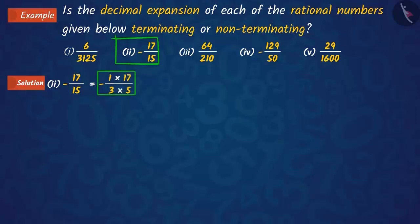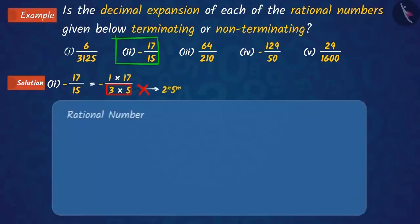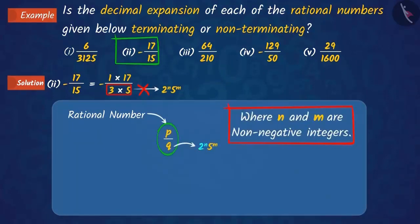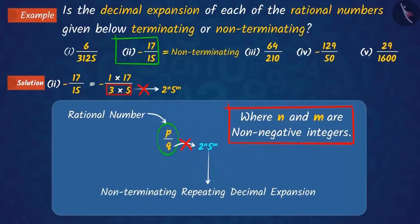After analyzing it, we see that the denominator is not in the form of 2 raised to n into 5 raised to m. You will remember that in a rational number p upon q, if q is not in the form of 2 raised to n into 5 raised to m, then the decimal expansion of the number is non-terminating.